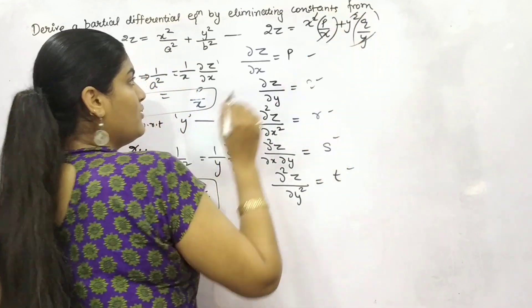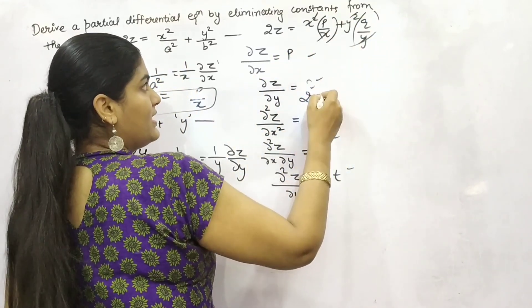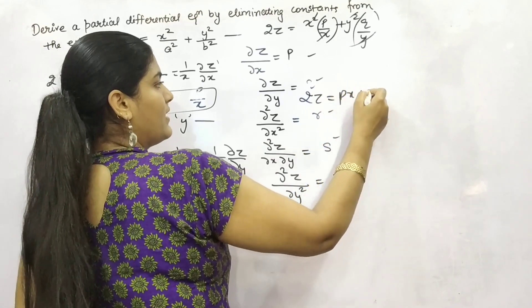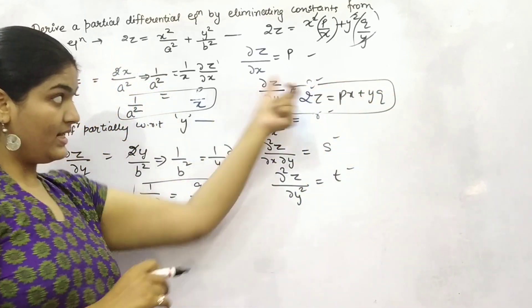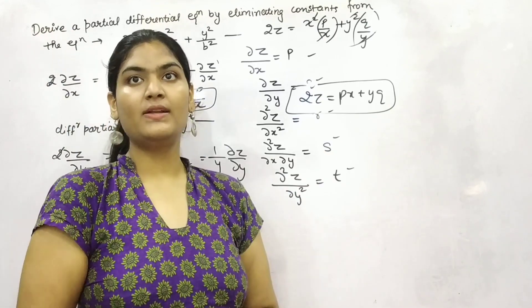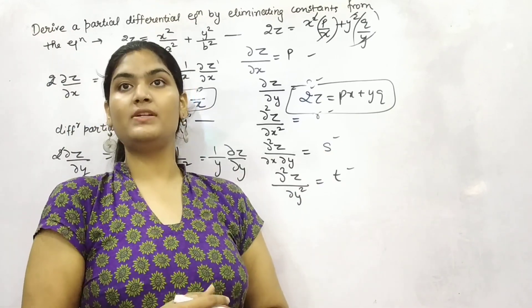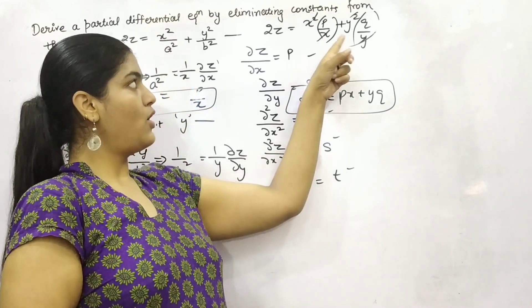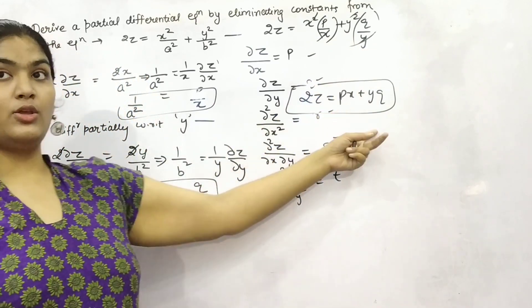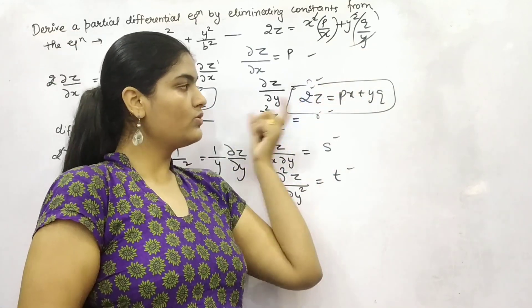So what will you get? 2z equals px plus yq. And you can see it is in the form of partial differentiation operator, partial differentiation of z with respect to x or with respect to y, p and q. And there is no constant here.